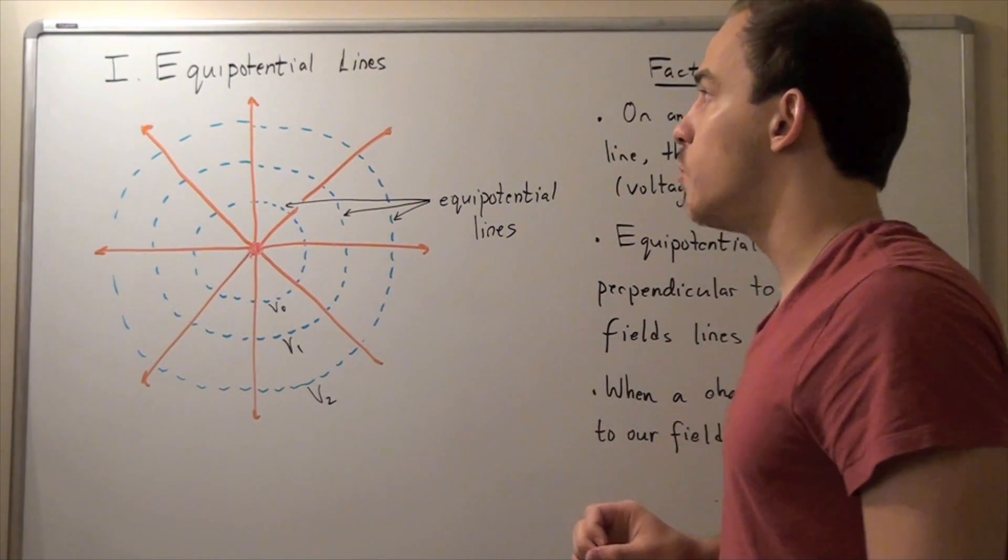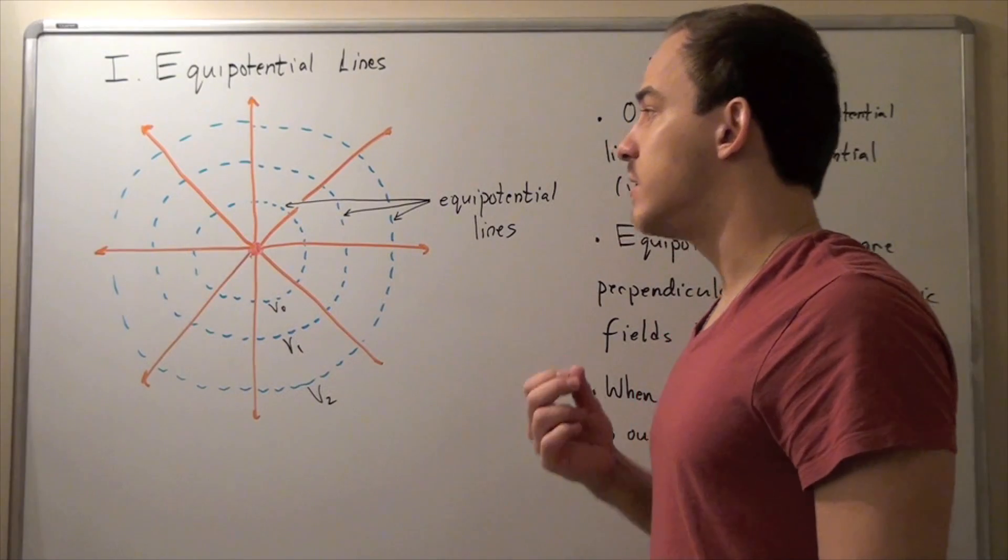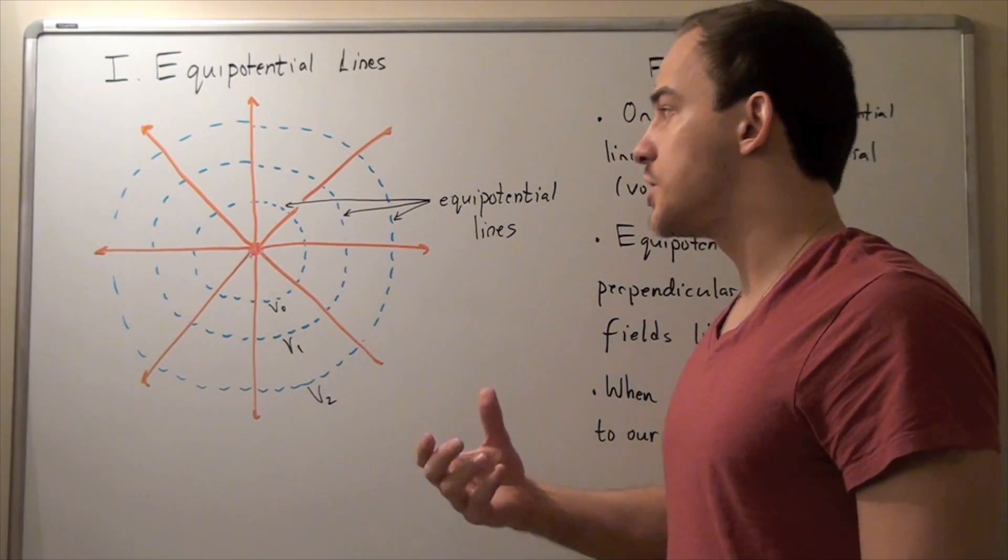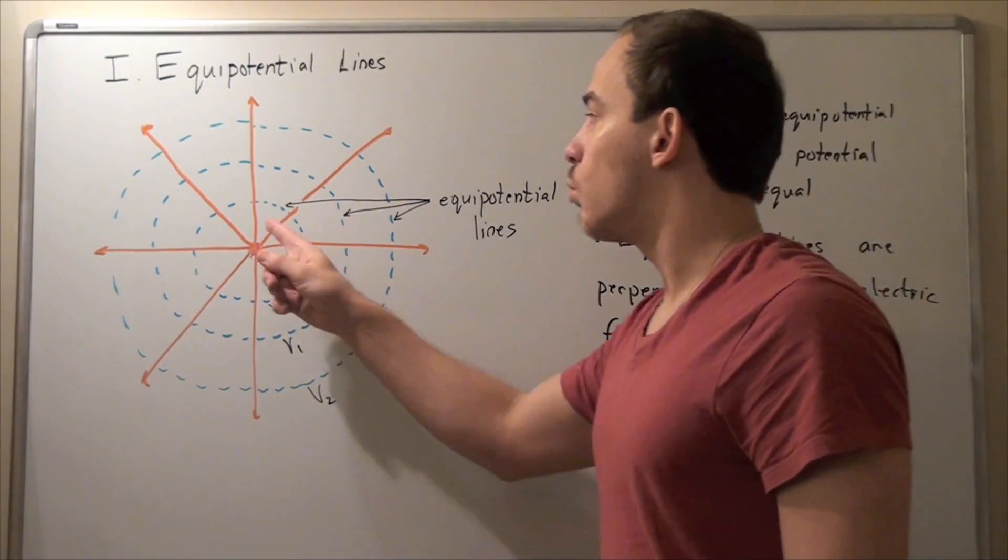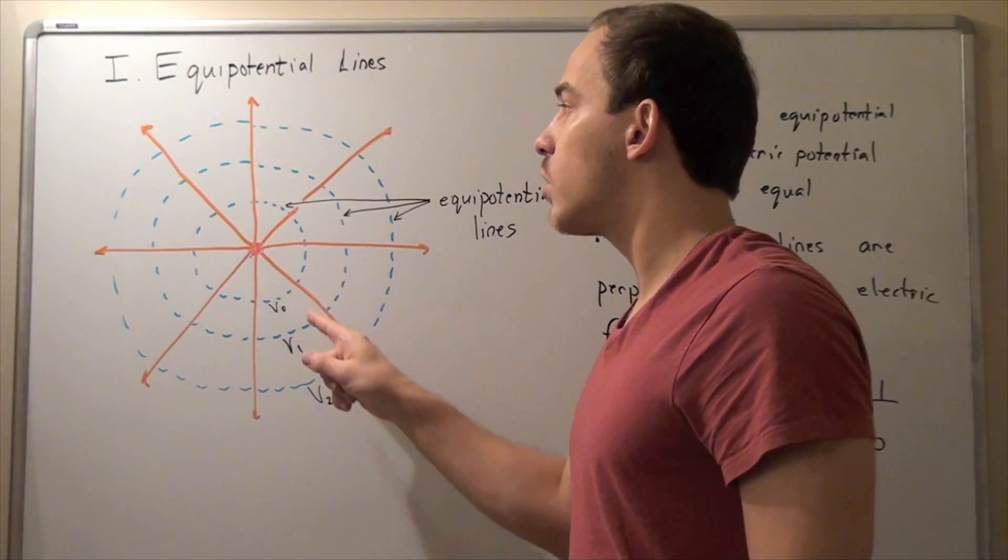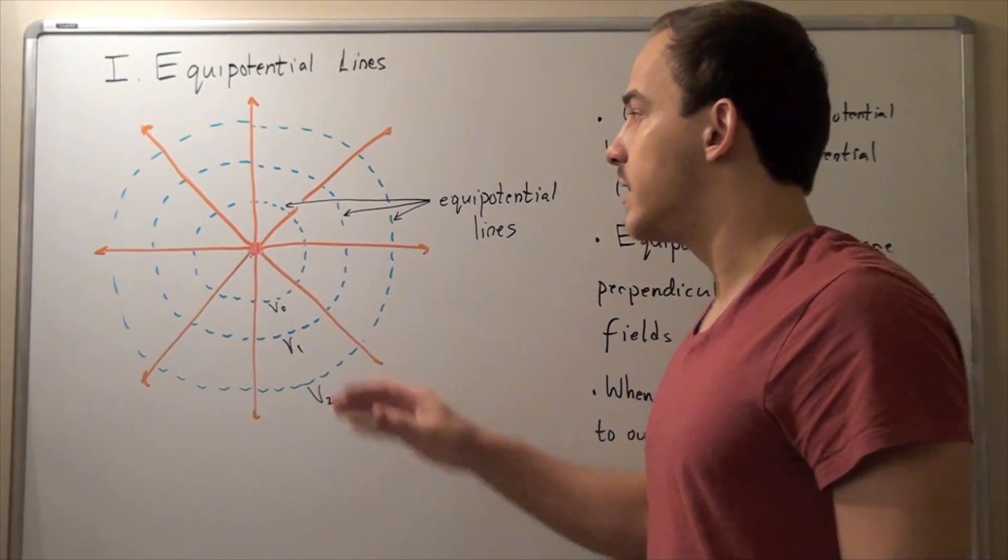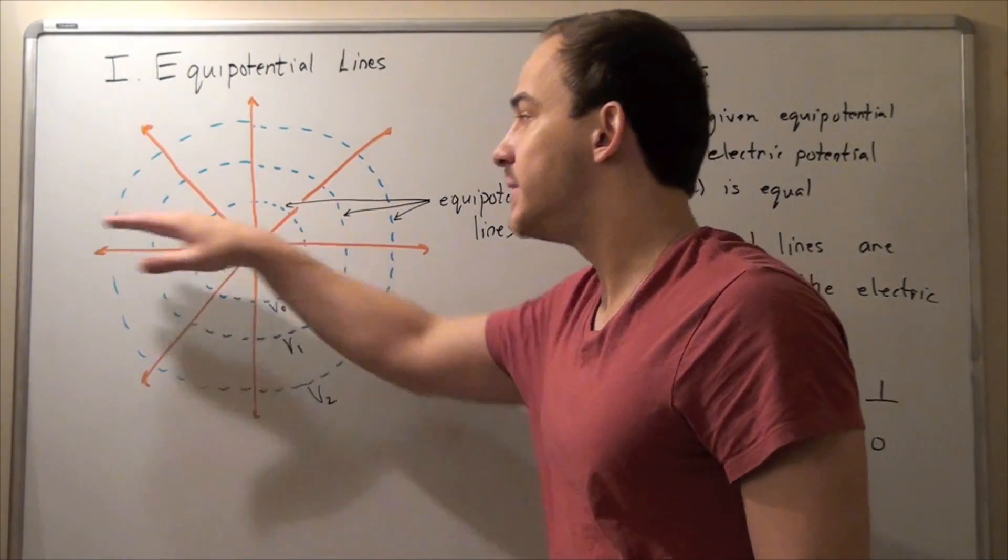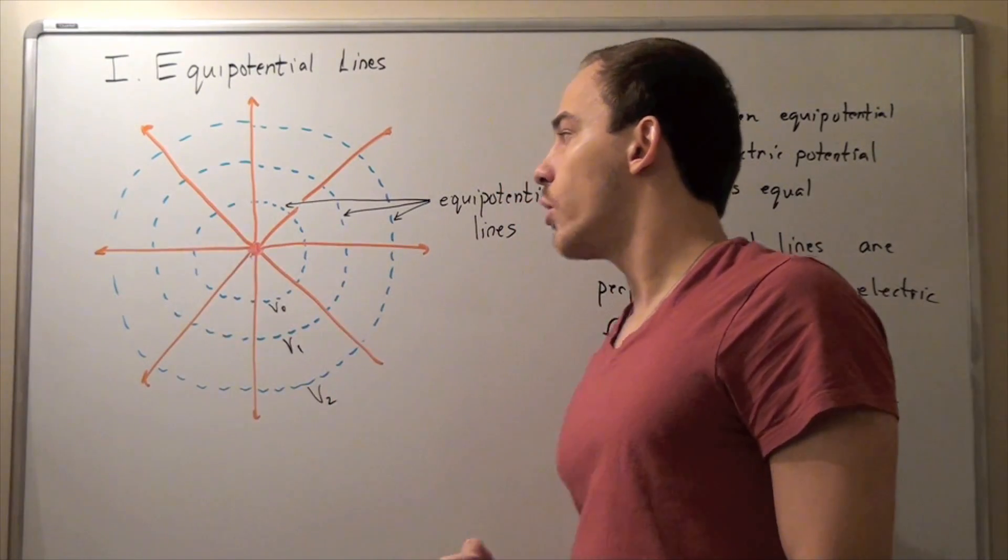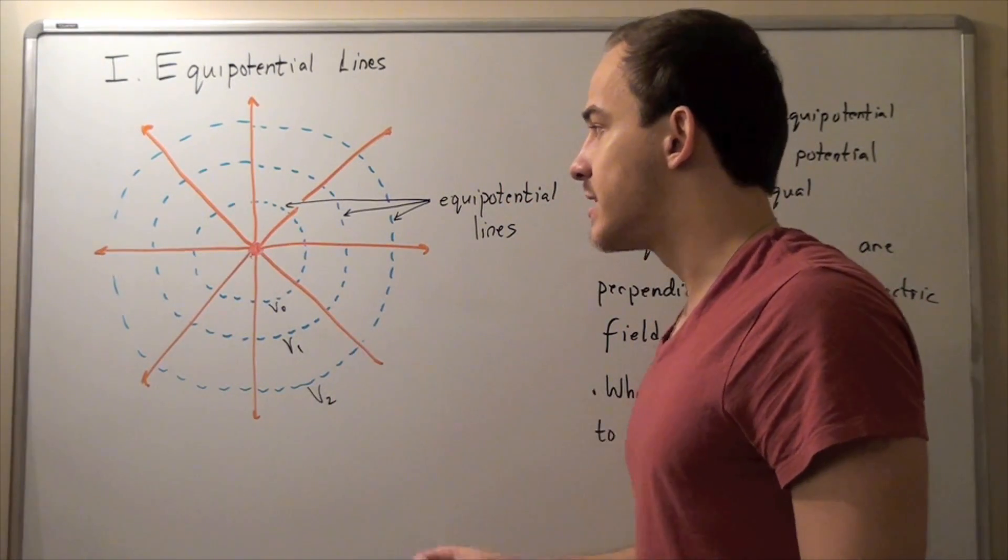But let's, for the moment, talk about electric fields. Suppose we have an electric charge, a positive charge, and we're going to draw our lines of forces or field lines extending outward, perpendicular to our spherical point charge. Now, if we draw lines, in this case, concentric circles,